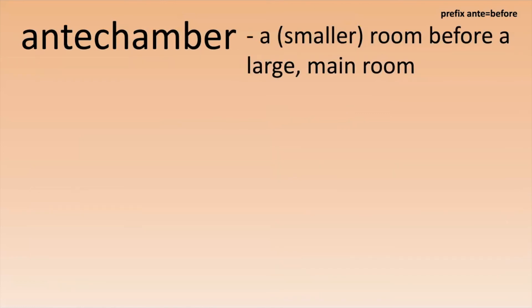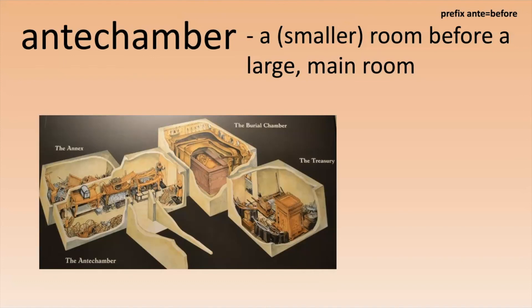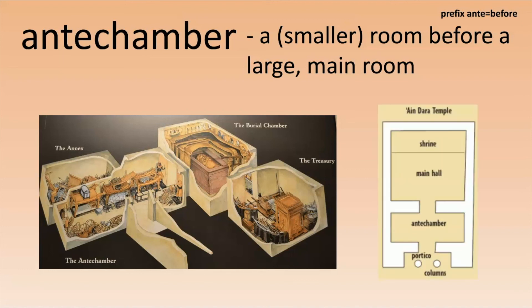An 'antechamber' — a chamber is just a room, so this is a room before a large main room. It doesn't necessarily have to be a smaller room. For example, this is King Tut's tomb and you can see the antechamber labeled here — it's a pretty big room, but it's not the main room. And here's an example of an ancient temple where you can see the antechamber is smaller than the main hall. But regardless, it's before it — it's in front of it.